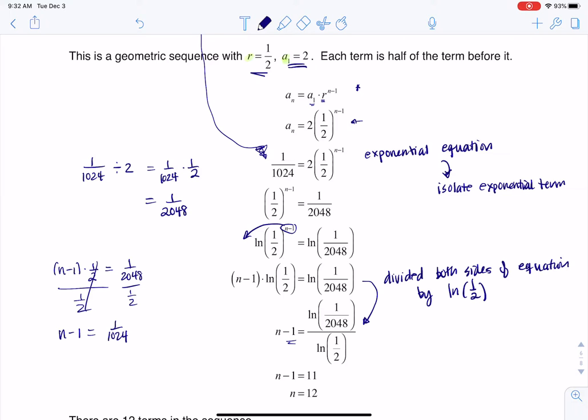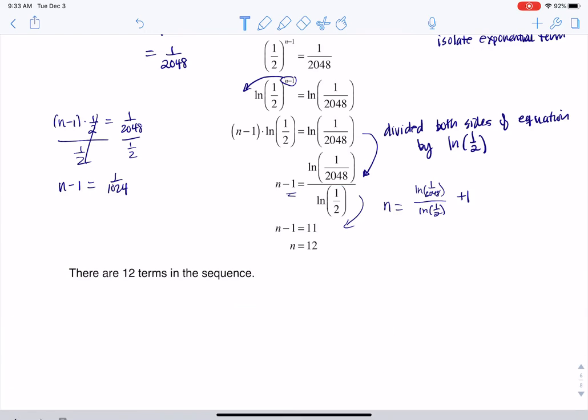And then the last thing I need to do is add 1 to both sides. So then I'm going to have, if you don't want to simplify it just yet, you could say n is equal to this huge ratio of ln of 1 over 2048 over ln of 1 half plus 1. But this beast right here is just the number 11. So once you see that if you plug that in your calculator and you get 11, you find out n is going to be equal to 12.